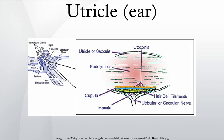The utricle contains mechanoreceptors called hair cells that distinguish between degrees of tilting of the head, thanks to their apical stereocilia setup. These are covered by otoliths which, due to gravity, pull on the stereocilia and tilt them. Depending on whether the tilt is in the direction of the kinocilium or not, the resulting hair cell polarization is excitatory or inhibitory, respectively. Any orientation of the head causes a combination of stimulation to the utricles and saccules of the two ears. The brain interprets head orientation by comparing these inputs to each other and to other input from the eyes and stretch receptors in the neck, thereby detecting whether only the head is tilted or the entire body is tipping.